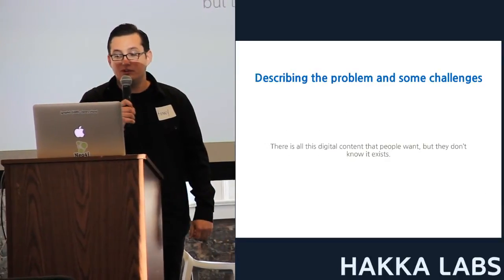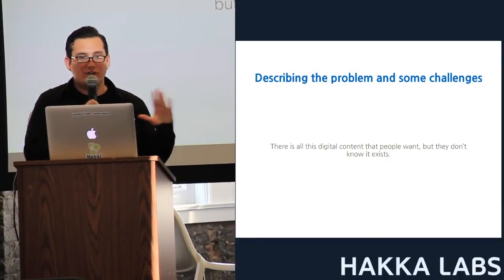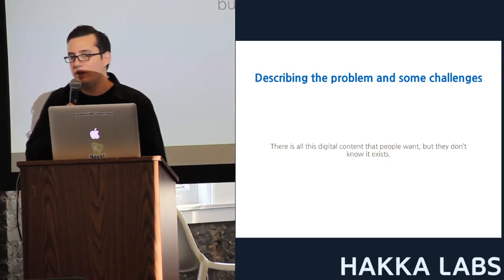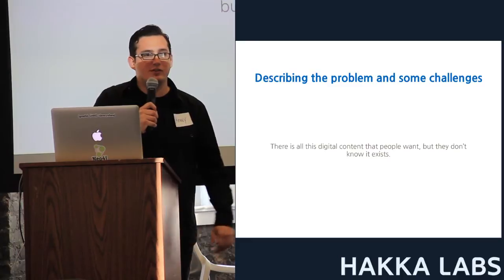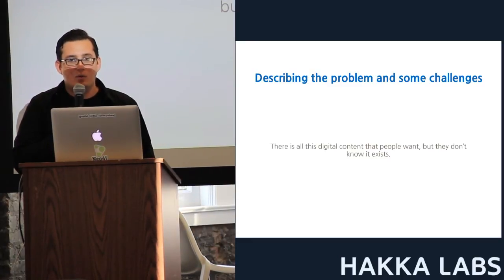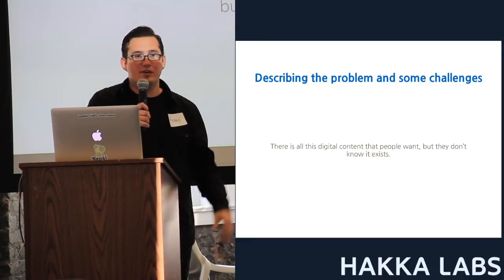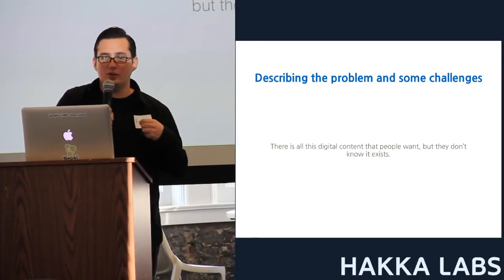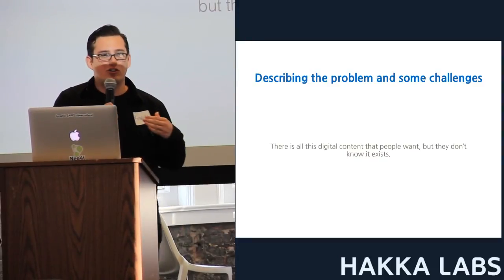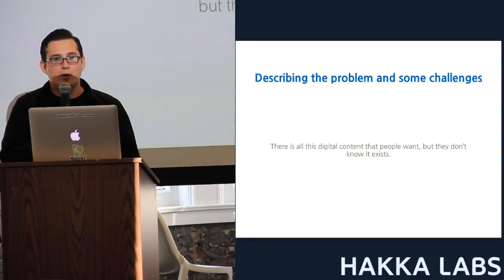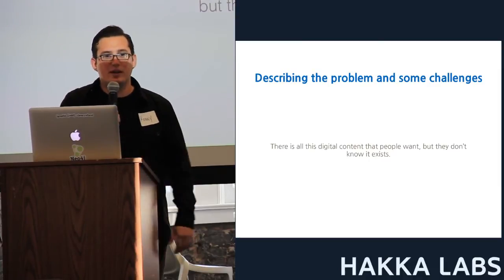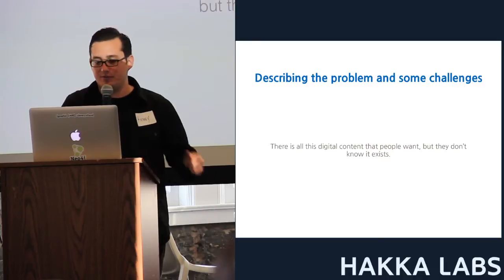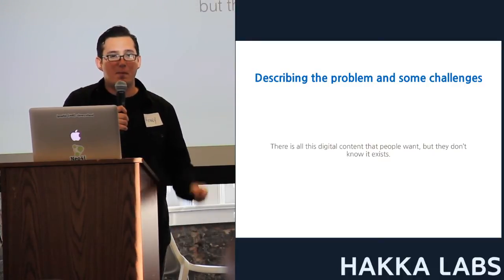Let me describe some problems and challenges. There is all this digital content out there and people don't know it exists. You might find yourself on the internet with a set of interests, being presented with recommended content, and going through all these posts without finding something you actually like. There is content out there for you — content you'll find interesting — it's just hard to find because there's so much data and it's getting so complex. People write blog posts every day on interesting things, but there's not a good way to map demand to content.